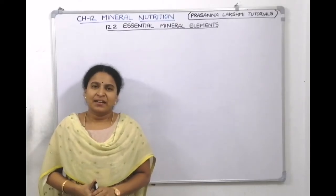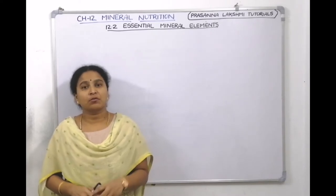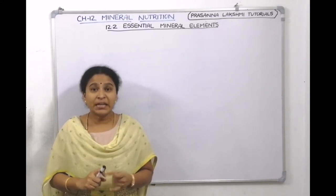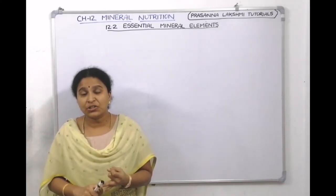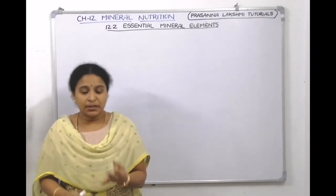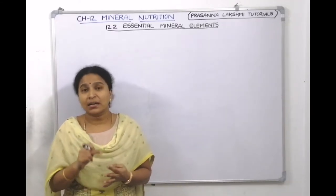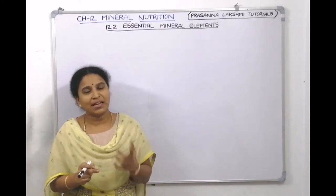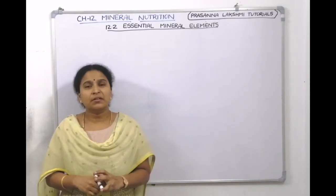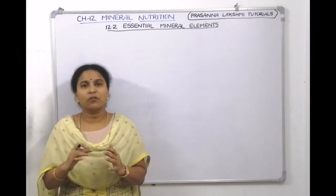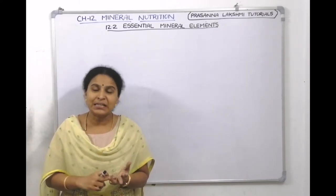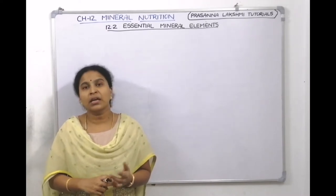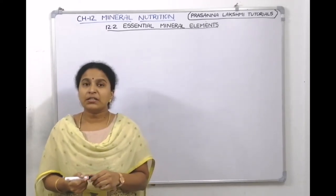Welcome everyone. In the first lecture we discussed about what is hydroponics and aeroponics. In the second lecture we discussed how many elements there are, what are essential elements, non-essential elements, mobile elements, immobile elements, beneficial elements, and structural elements. In today's lecture we'll see some historical account of mineral nutrition and then talk about the criteria of essentiality proposed by Arnon and Stout.